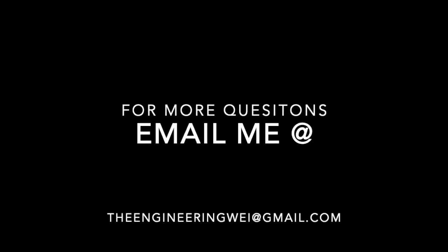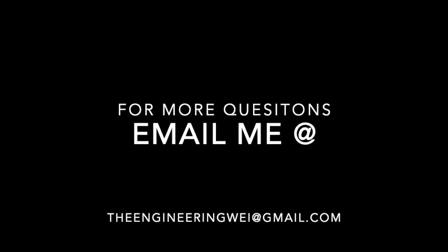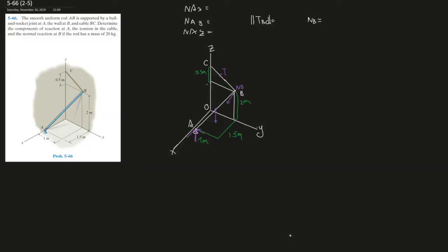I can assist you or tutor you more if you have more questions — just email me. Question 66, the fifth question in the second set of chapter five — this is where the fun begins. This is where we start using 3D cross product and moment equations to help us find the answer. It's going to be very long; I just redid the question before making this video and it took me about 40 minutes.